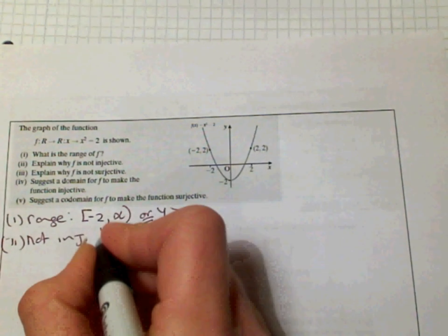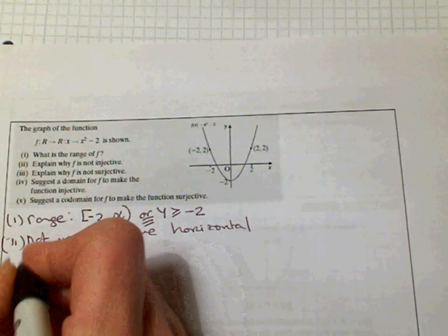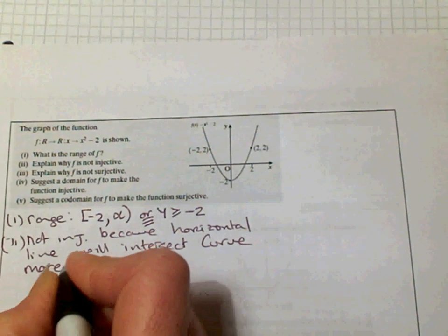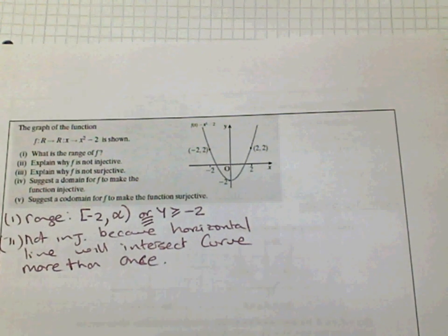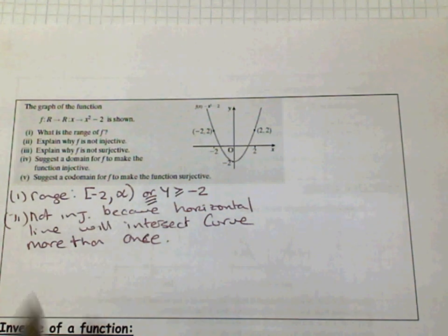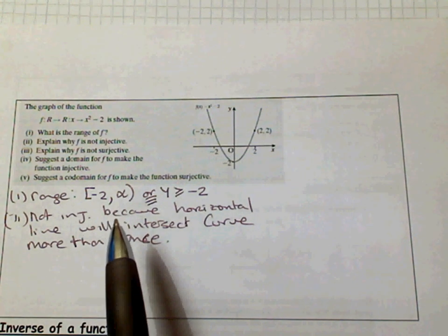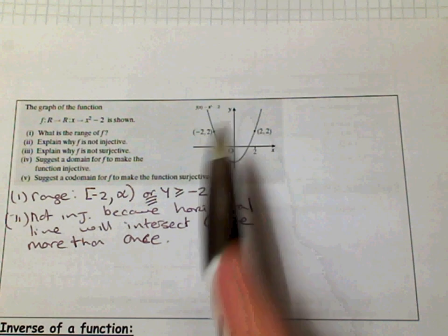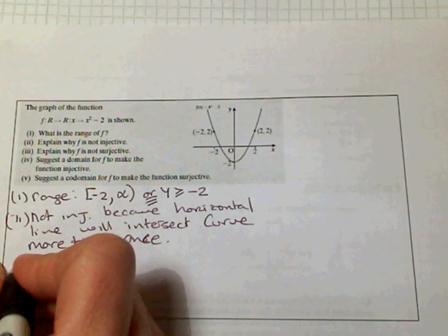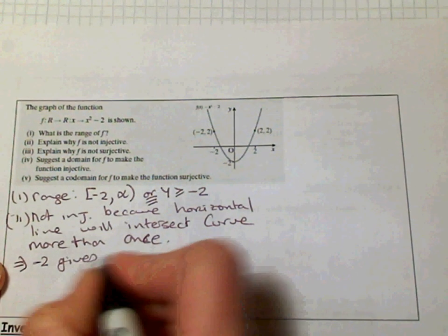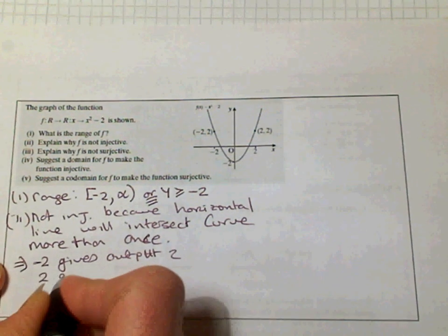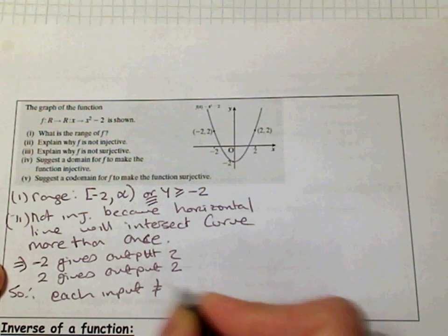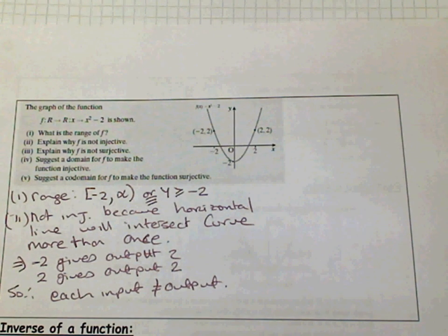It's not injective because a horizontal line will intersect the curve more than once. Another reason: looking at the definition, if you input minus two you get two, and if you input two you also get two. So each input does not have a unique output. Also, minus two gives an output of two, therefore each input does not have a unique output.